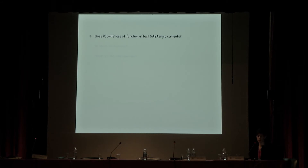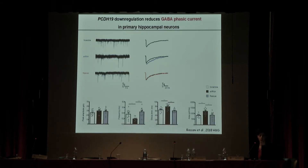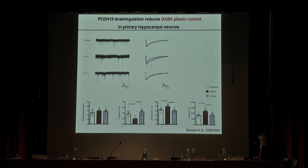Concerning the first question: if we down-regulate protocadherin-19 in cultured neurons, we see a decrease in the phasic component of inhibitory currents. There is a significant decrease in miniature inhibitory postsynaptic currents that also present a different decay time.